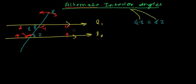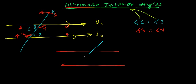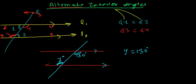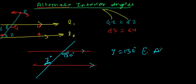Let me write angle 3 equals angle 4 as well. So let me give you an example: if this angle is 130°, and the question asks what is the value of y°, then y is directly 130° if these two lines are parallel. If these two lines are parallel and this is the transversal line, then these are alternate interior angles and you can directly write y = 130°, because alternate interior angles formed between two parallel lines are equal.